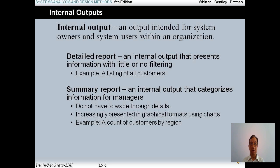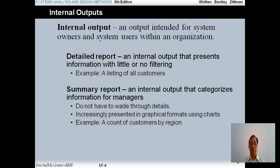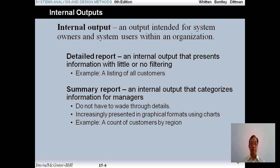The second report is a summary report. It's a kind of report that categorizes information for managers. Managers use the summary report to make decisions, so they don't want the detailed report — they want a summary report to understand the business broadly. In a summary report we do not have all the through detail, and we can use graphical format using charts like in Excel to increase the information conveyed. An example is a count of customers by region. The last one is an exception report — a report about exceptions.